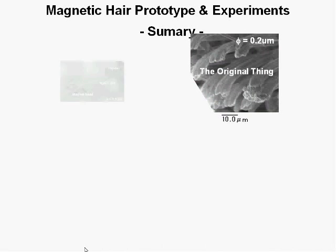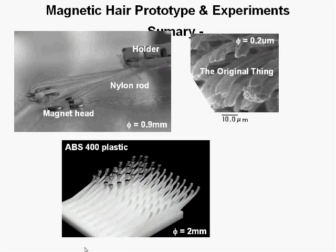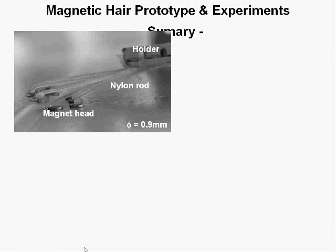We made some prototypes. Here we have the original thing, here we have a prototype made of nylon. The shape is by thermoforming. A slightly bigger size made with rapid prototyping, and a human size also with rapid prototyping.